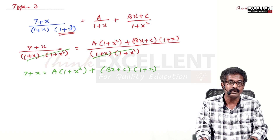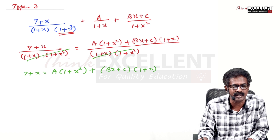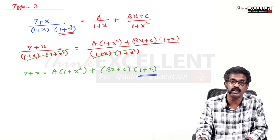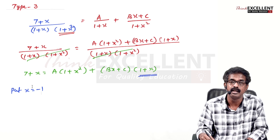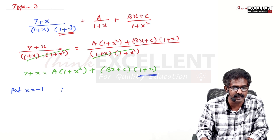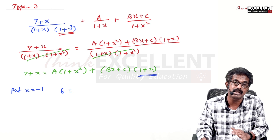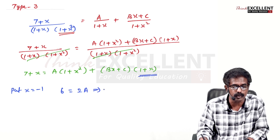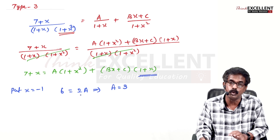Now we have to find A, B, and C. Make the factors zero one by one. There is only one linear factor: (1+x). Put x = -1. Left side: 7 - 1 = 6. Right side: A(1+1) = 2A. So A = 6/2 = 3.